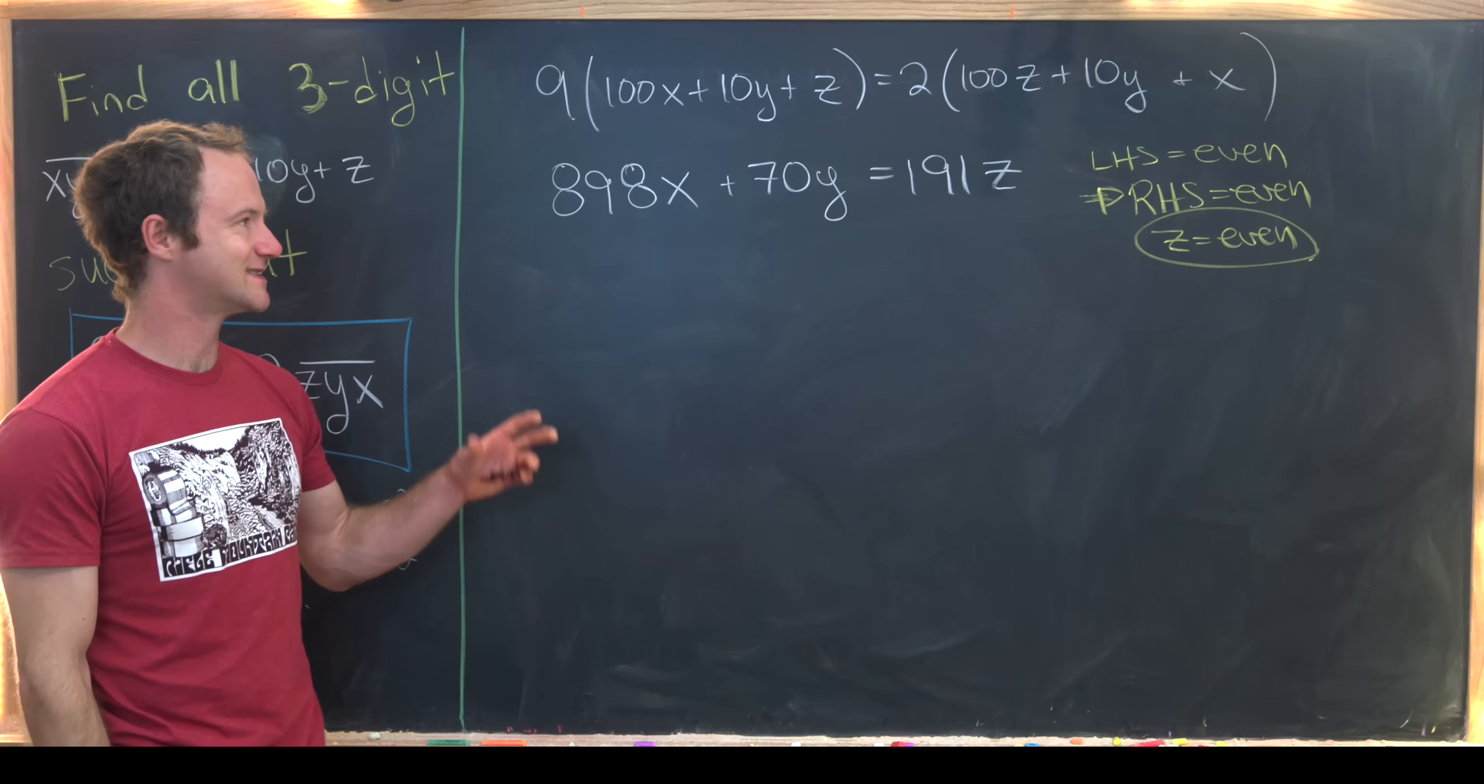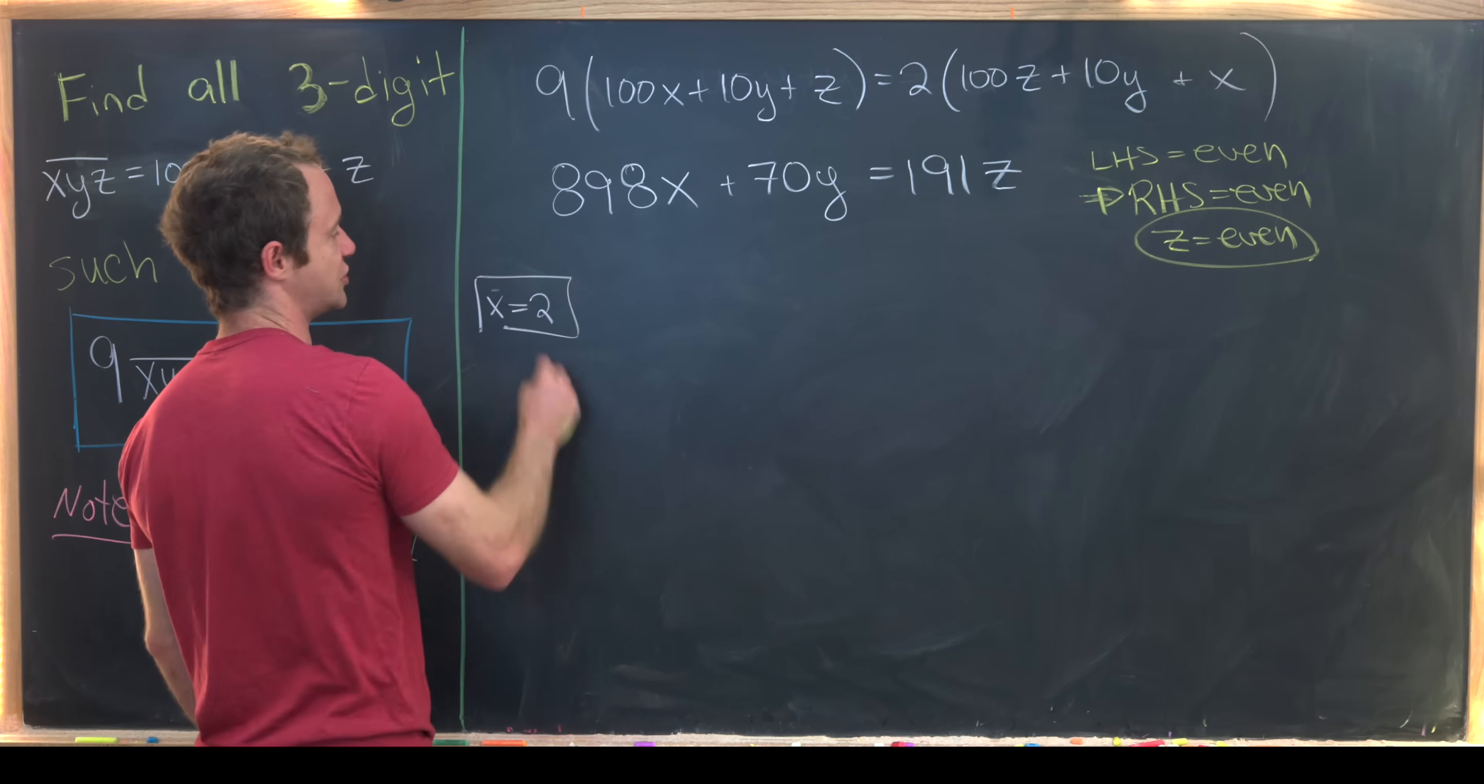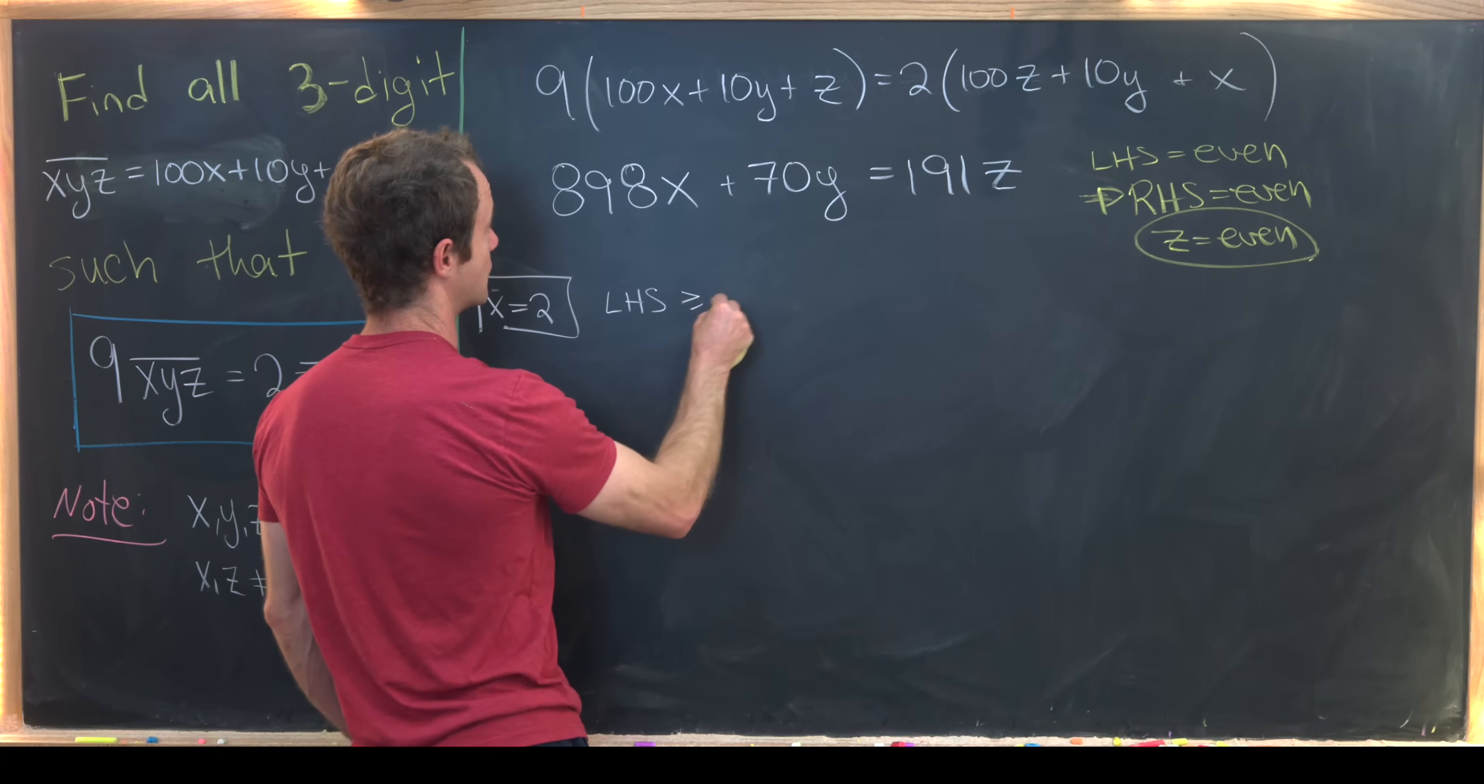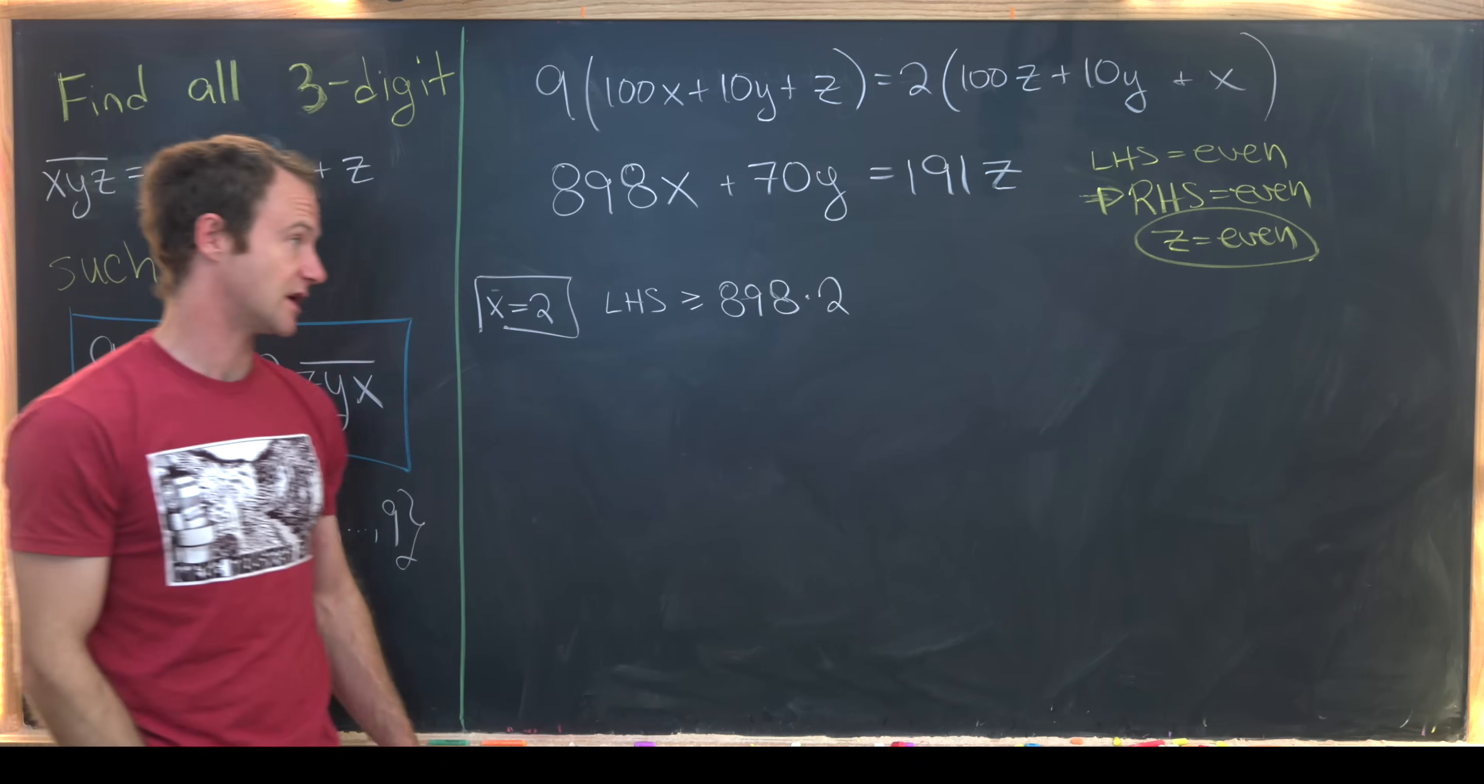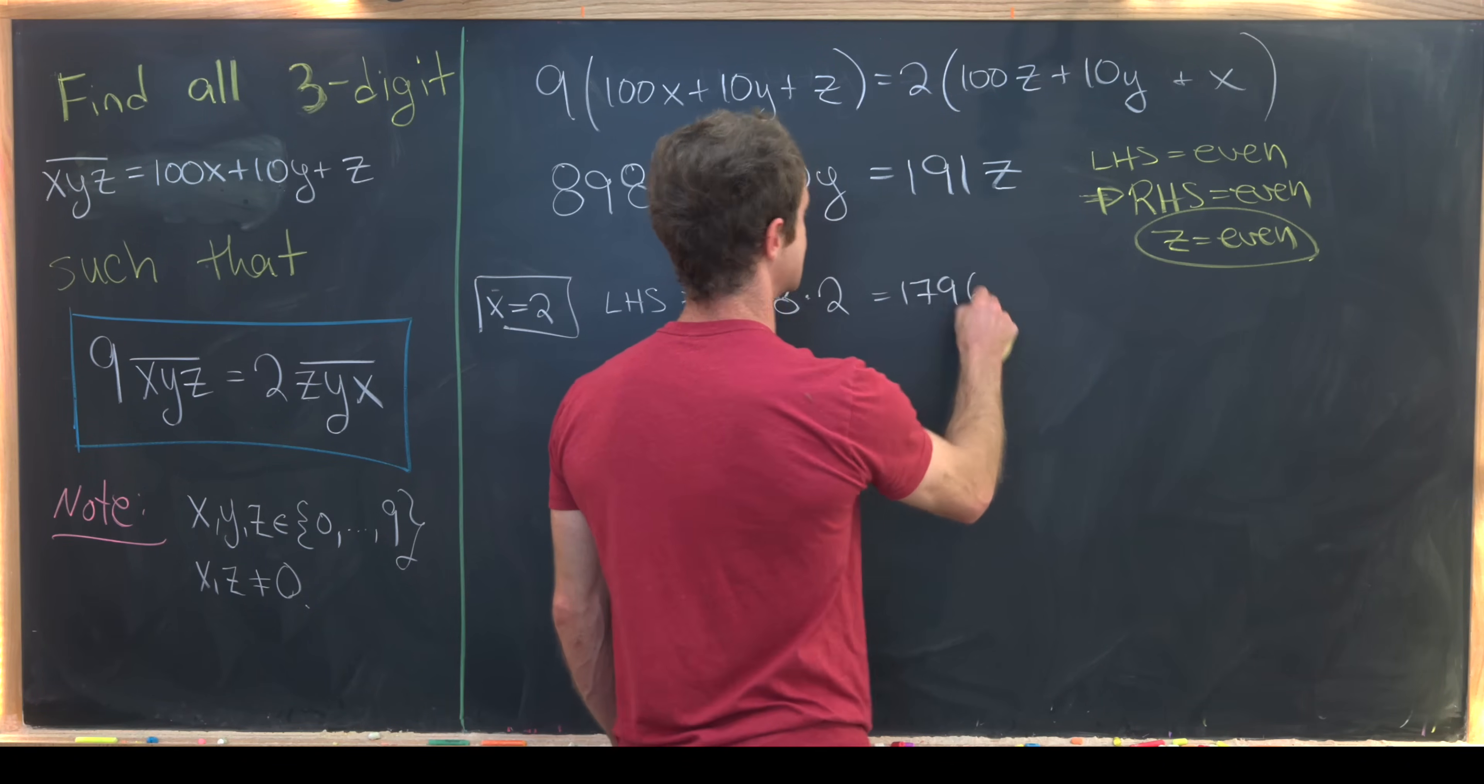Now we're going to do some quick calculations to get some size ranges for the left and the right hand side of this equation. So let's first notice that if we set x equal to 2 then that makes the left hand side of the equation bigger than or equal to 898 times 2. That's pretty obvious. We just left off the 70 times y. But 898 times 2 is 1796.